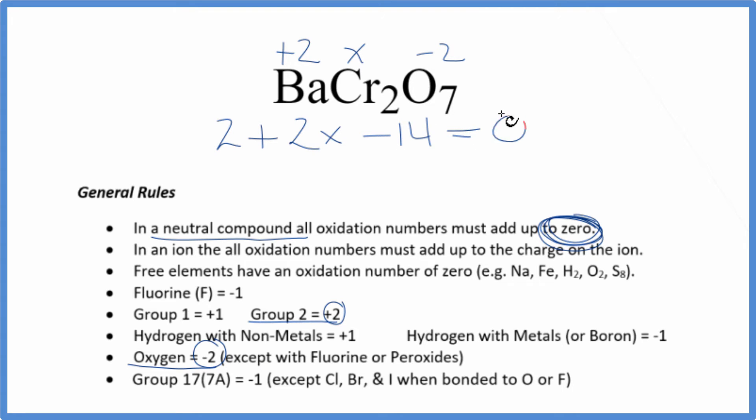That'll all equal zero. So two X minus 12 equals zero. Let's add 12 to both sides. So we get two X equals a positive 12. So X is going to equal a positive six.